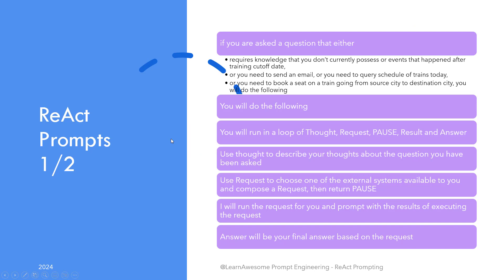Now that we are familiar with ReAct, let's go back to our earlier example where you were helping out the large language model for external operations. Let's say we want to move you out of the picture and automate the process. We do so by prompting the large language model — say ChatGPT — with the following addition to the original prompt: if you are asked a question that requires knowledge you don't possess, or events after your training cutoff date, or you need to send an email, query train schedules, or book a seat on a train, you would run in a loop of: thought, request, pause, and answer. Use 'thought' to describe your thoughts about the question. Use 'request' to choose one of the external systems available to you and compose a request, then return 'pause.' I will run the request for you and prompt you with the results. 'Answer' will be your final answer based on the results.